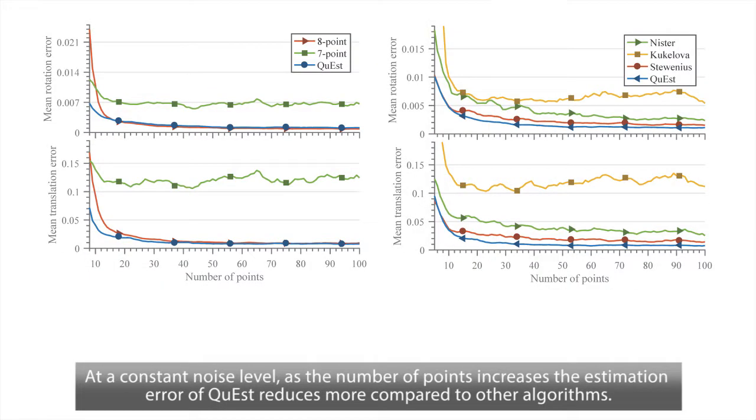At a constant noise level, as the number of points increases, the estimation error of Quest reduces more compared to other algorithms.